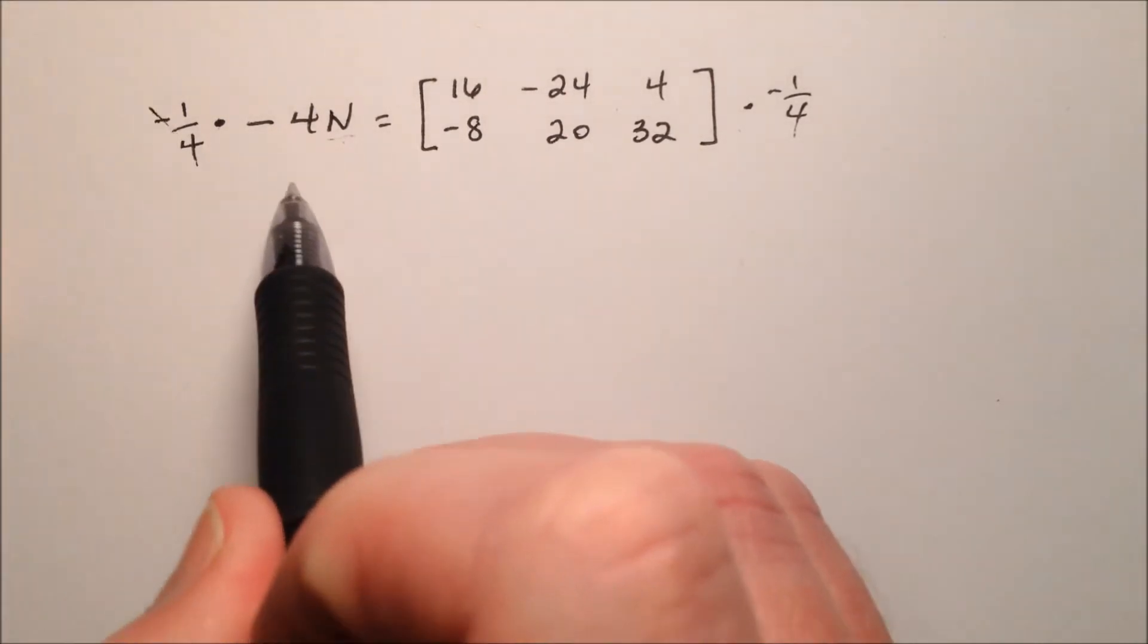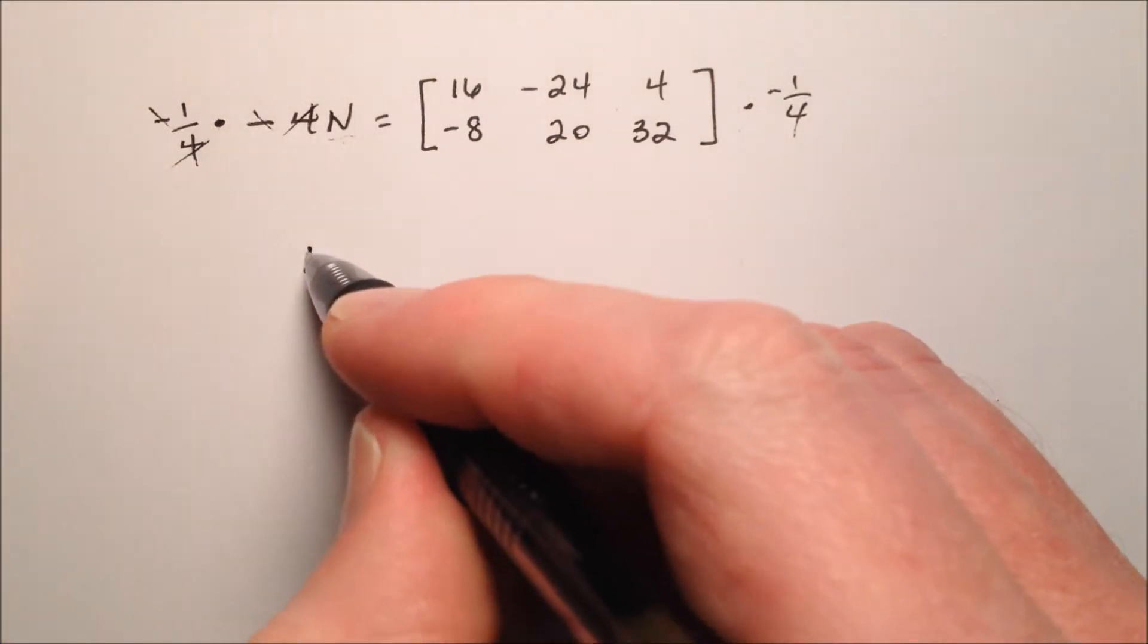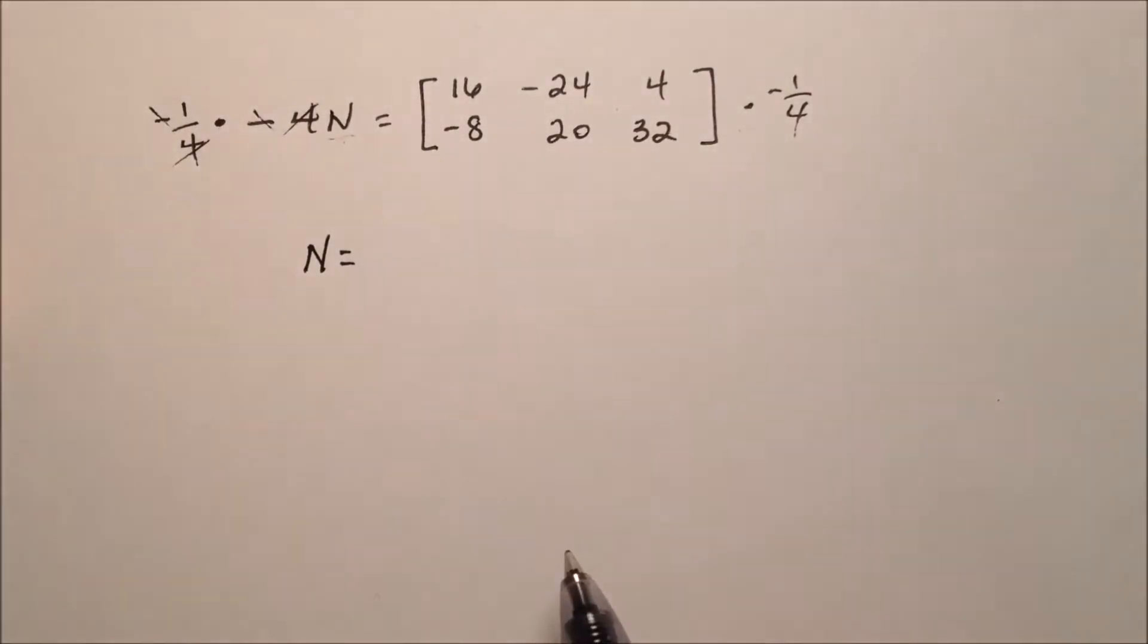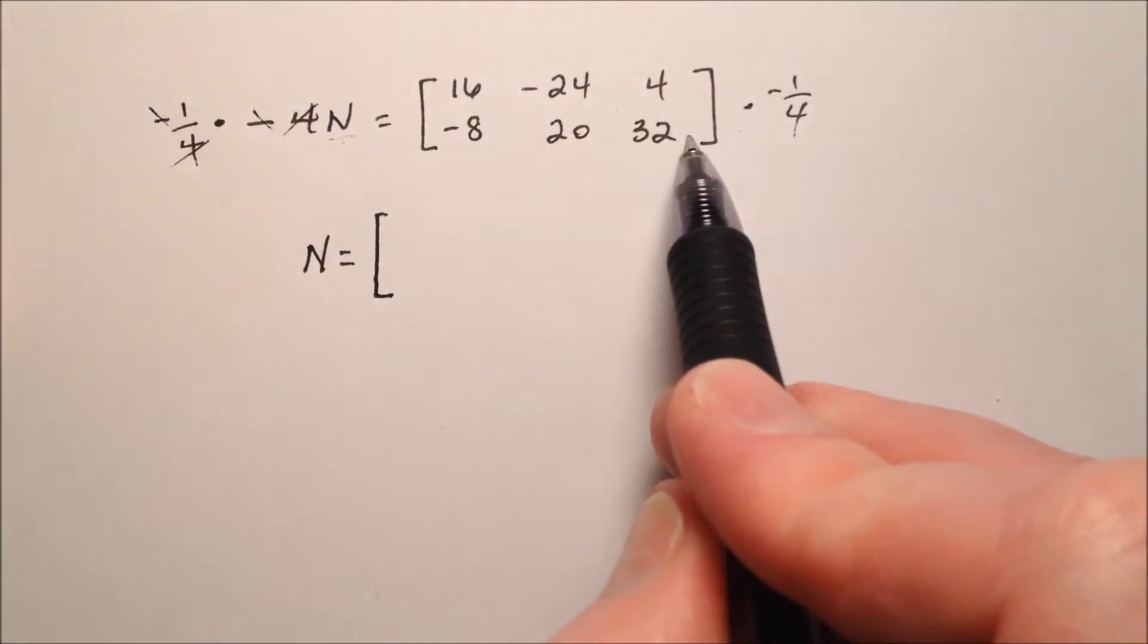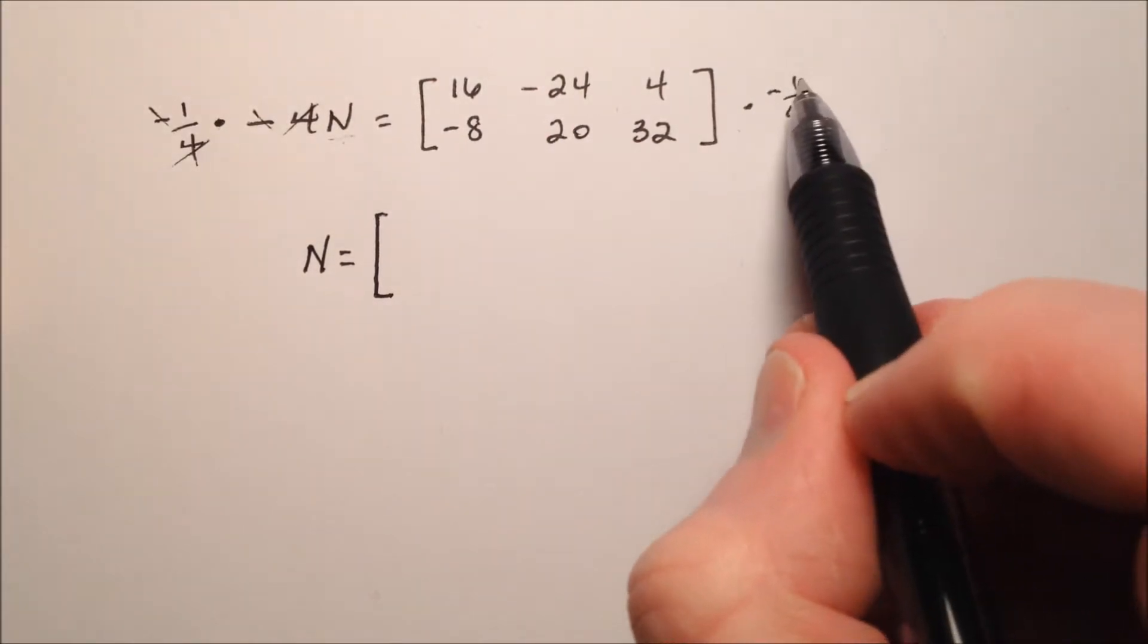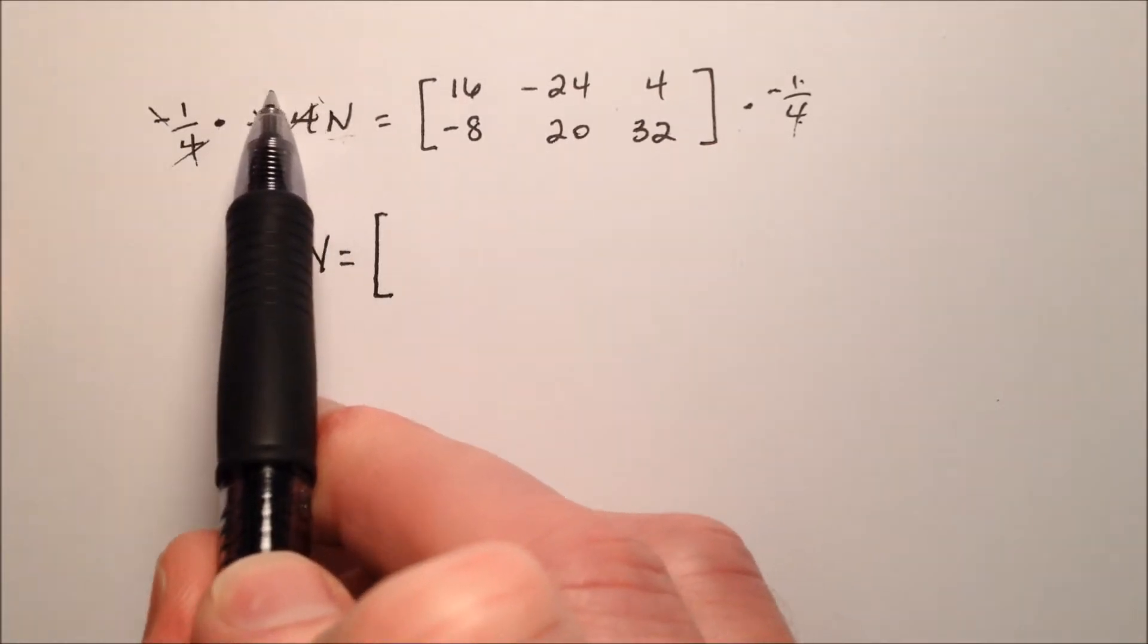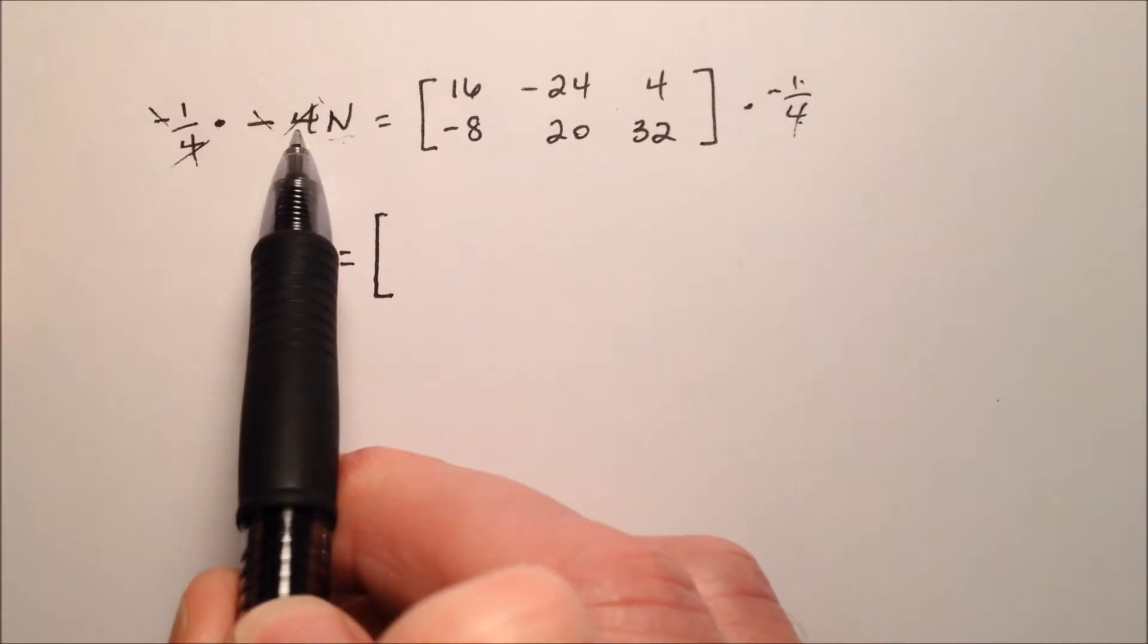So on the left over here, my negatives will cancel, my 4s will cancel, and I'm left with just N. So N equals this 2 by 3 matrix, and this one needs to be scaled by negative 1 fourth to undo the scaling that happened on the left side where I multiplied N by negative 4.